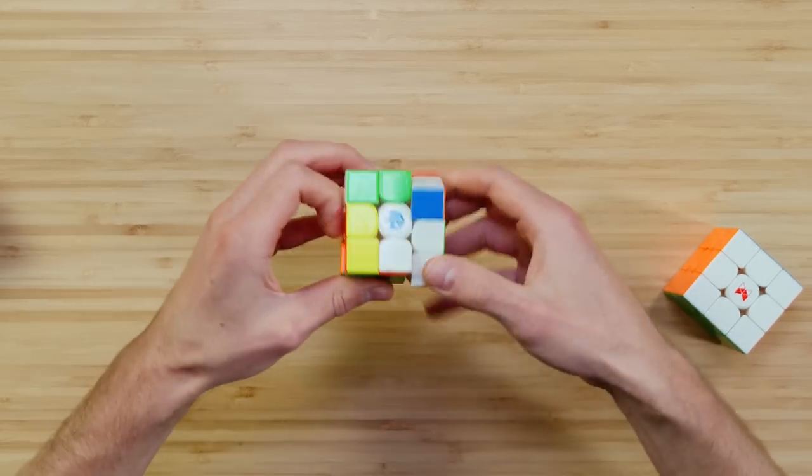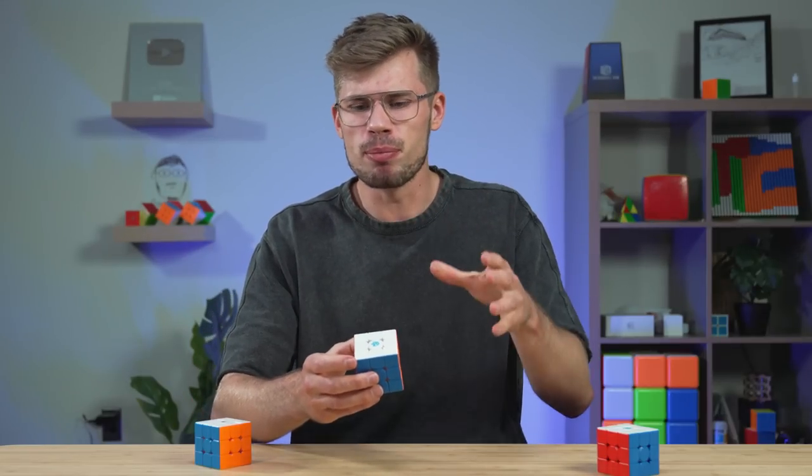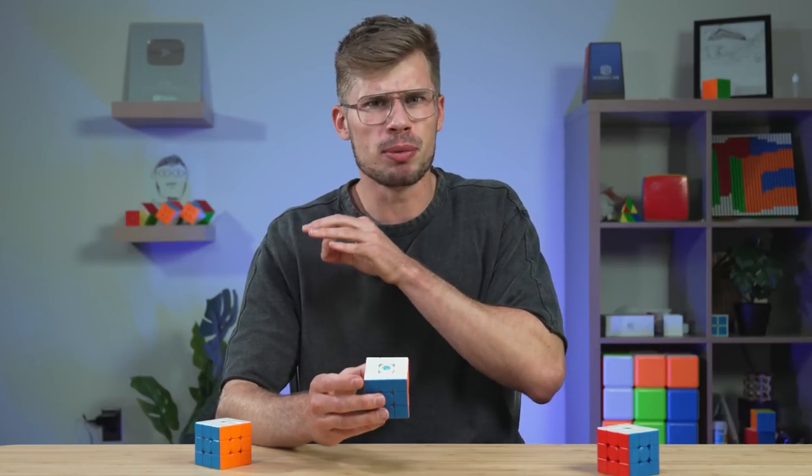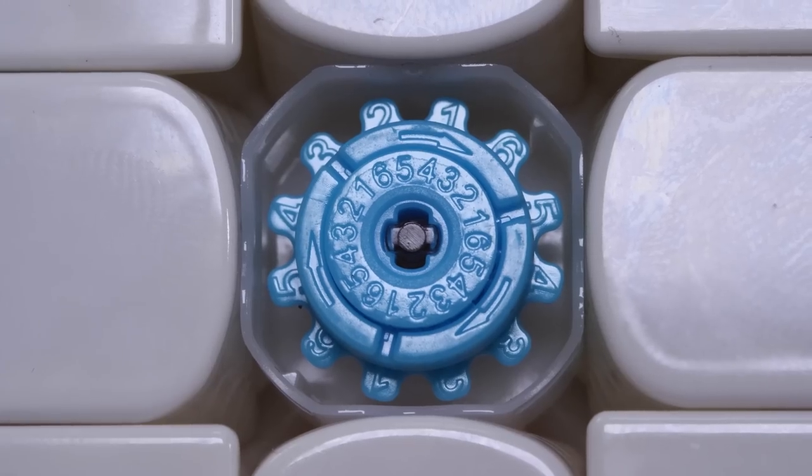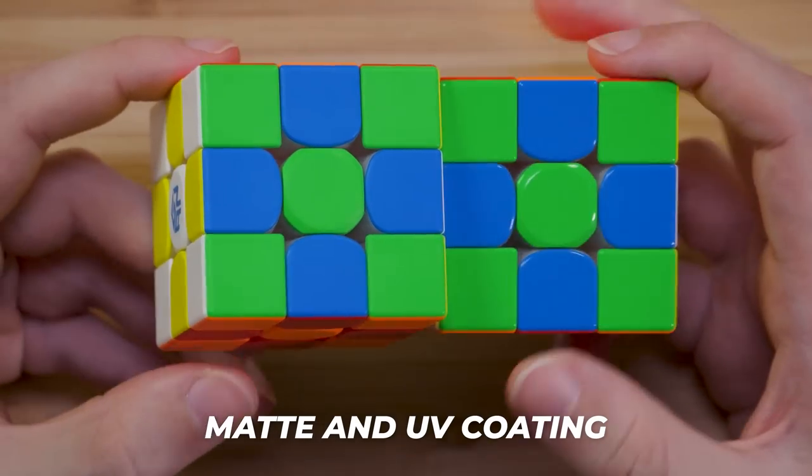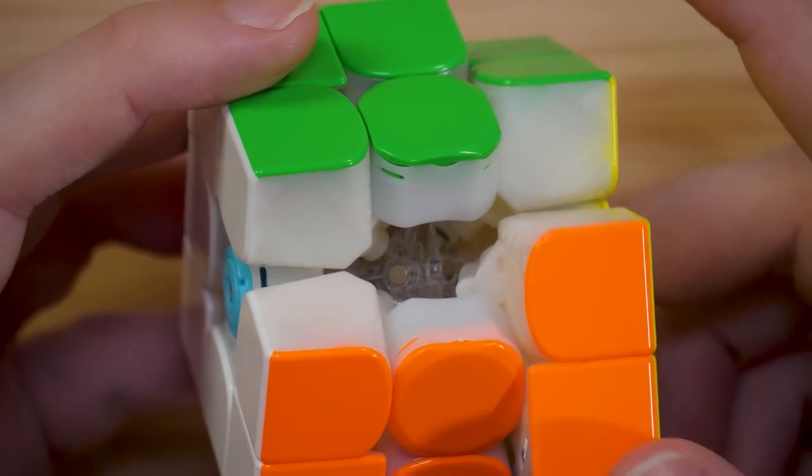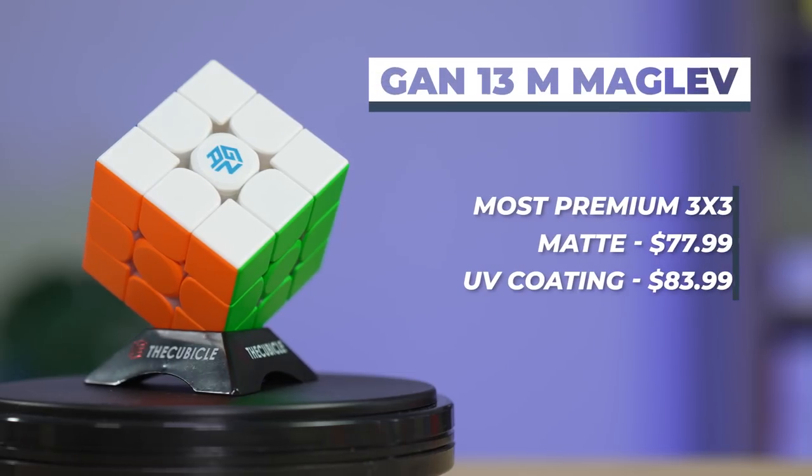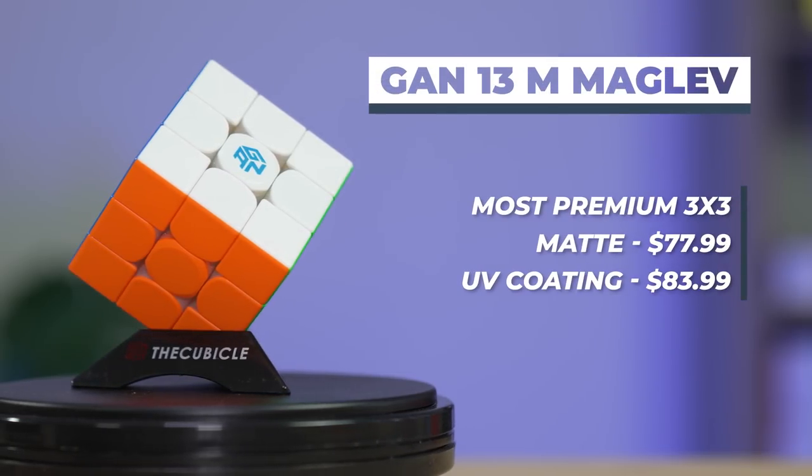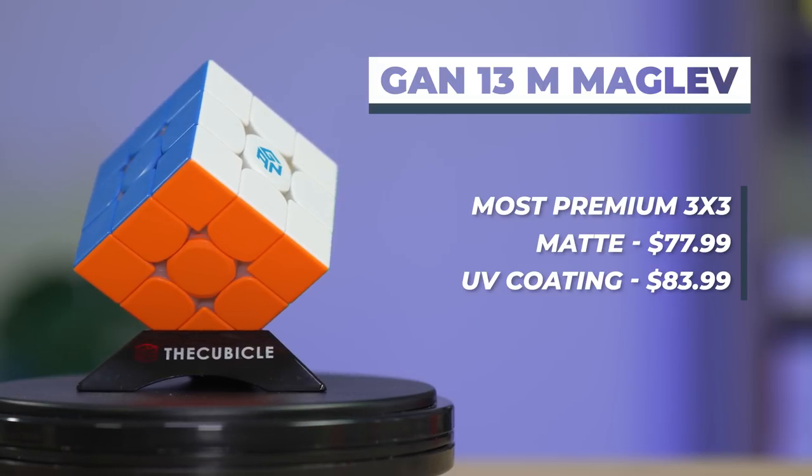from the best valued cube to the most premium cube, we have the GAN 13M Maglev. You know, you definitely notice the difference between just like the premium build quality, going from a budget cube to the most premium cube out there. The GAN 13M pretty much has anything you need. It has adjustable magnet strength, dual adjustment system, Maglev, UV coating. You name it, this cube has all of it. Guys, it even has repelling edge magnets. What? There are magnets in this cube that repel each other? Doesn't make any sense? Well, it should actually make the auto alignment a bit better. Overall, our opinion is that the GAN 13M Maglev performs slightly better than last year's 12M Maglev. But you know,